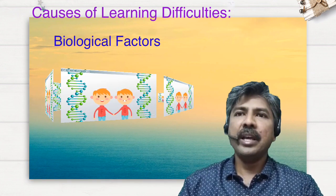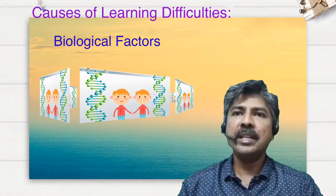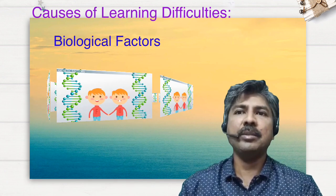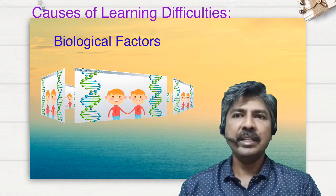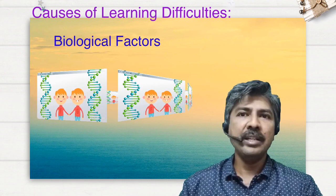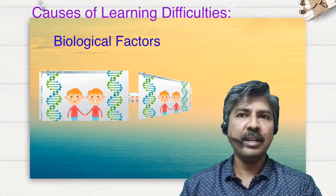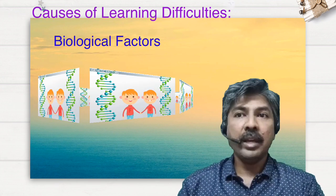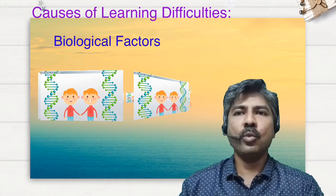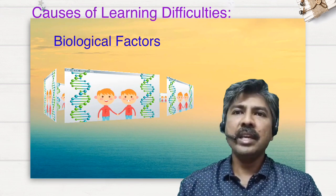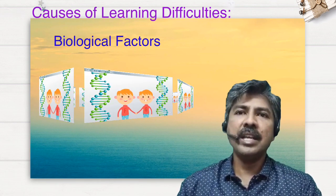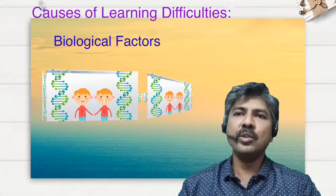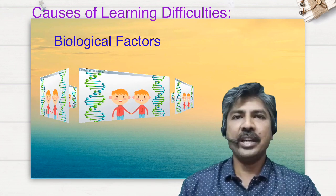These biological causes are more or less permanent and can be improved upon but not changed completely. They lead to unexpected and persistent difficulty in specific areas of academic achievement like dyslexia, dyscalculia, dysgraphia, dyspraxia, and attention deficit problems. In these cases it is necessary to modify the learning objectives based on the capacity of the child.